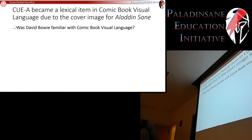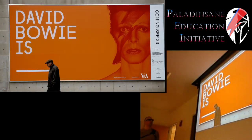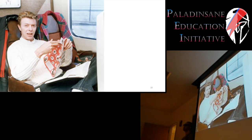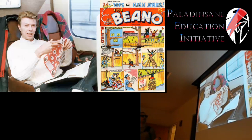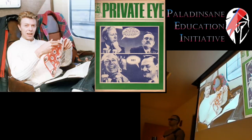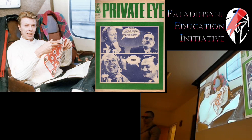Was Bowie familiar with comic book visual language? That's easy to show — the traveling exhibit 'David Bowie Is' contained a list of David Bowie's 100 favorite books of all time. Among that list were three comic books: the comic book Bino, Octobriana and the Russian Underground, and a magazine called The Private Eye, whose covers and political cartoons often use comic book language. It's definitely clear that he was very familiar with comics — at least three were in his top 100.